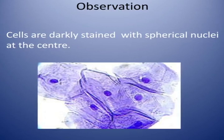Here is the observation. You can see the image of cheek cells — the cells are darkly stained with spherical nuclei at the center. One important thing to notice: the cheek cell does not have a cell wall, because it is an animal cell, and animal cells do not have a cell wall.